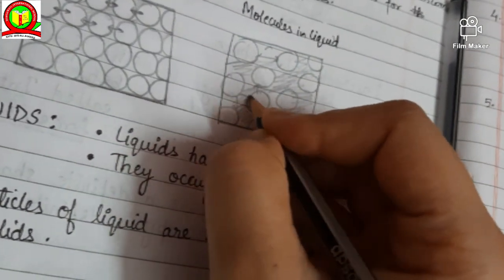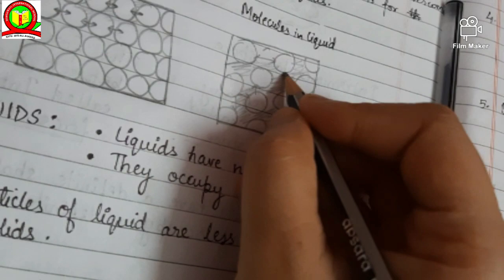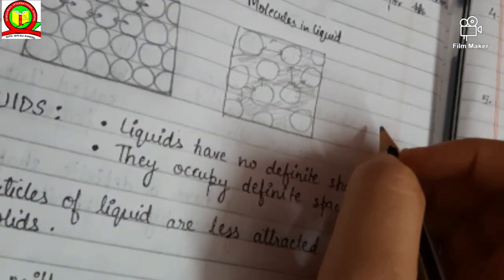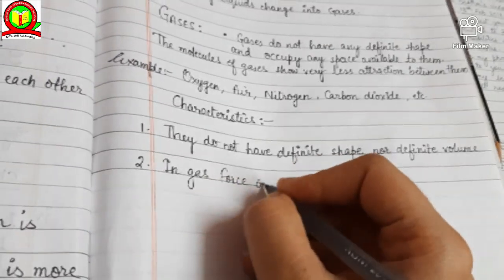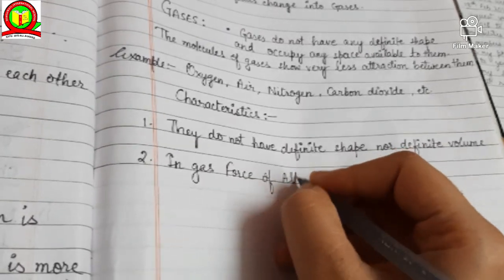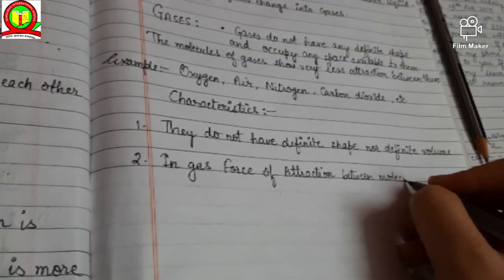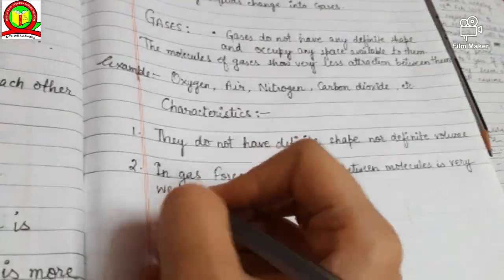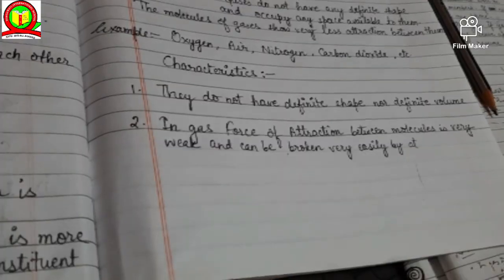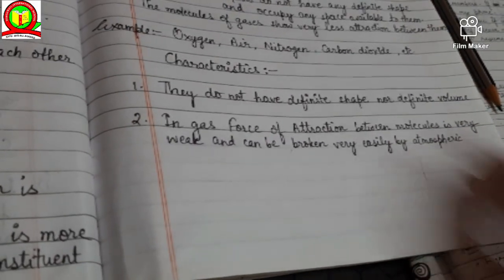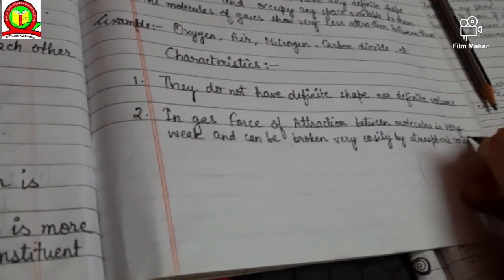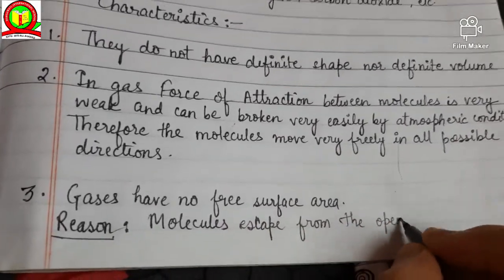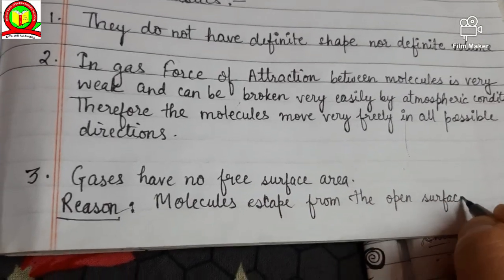Moving forward to gases — gases do not have any definite shape and occupy any space available to them. The molecules of gases show very little attraction between them. For example, oxygen, air, nitrogen, and carbon dioxide. The first characteristic: gases do not have definite shape nor definite volume. Second, in gases the force of attraction between molecules is very weak and can be broken easily by atmospheric conditions.